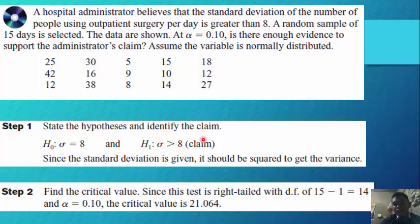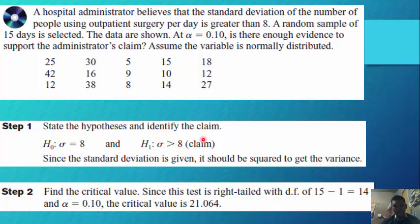Step 2: Find the critical value. The test is right-tailed with degrees of freedom of 15 minus 1 equals 14 (from the 15-day random sample), and alpha of 0.10. The critical value from table F is 21.064.